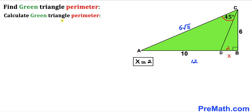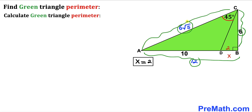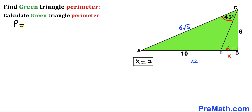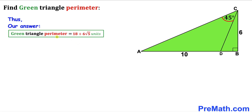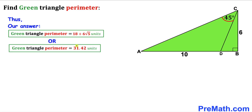Here's our final step. The perimeter of green triangle ABC equals AB plus BC plus AC, which is 12 plus 6 plus 6 root 5. Adding everything on the right-hand side gives us 18 plus 6 times the square root of 5 units. This can also be written as approximately 31.42 units. Thanks for watching and please don't forget to subscribe to my channel for more exciting videos.